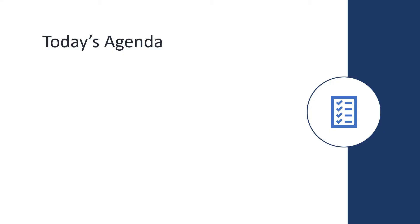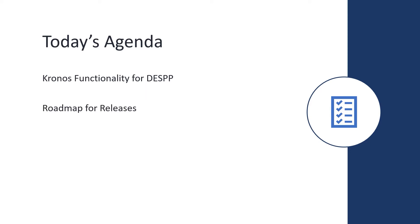This state-of-the-art product will accurately track employee time, improve productivity, and give employees a view of their time and leave information. We are also installing Kronos Telestaff, which will schedule our state police troopers and dispatchers. On today's agenda, we will cover how Kronos will function for DESP users, review the roadmap for the project, cover frequently asked questions, and look at next steps.